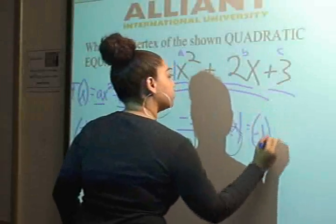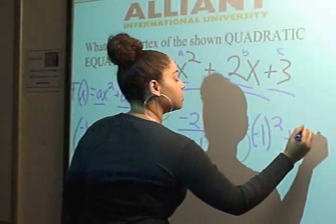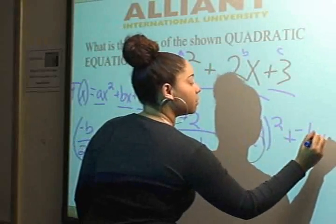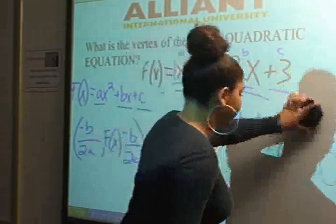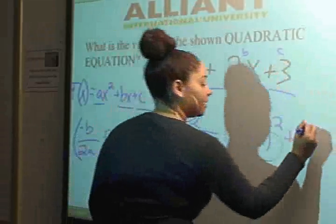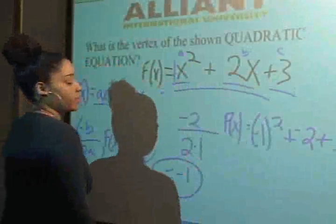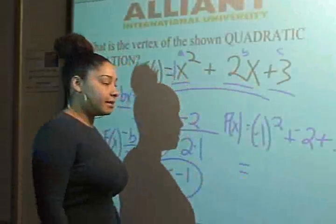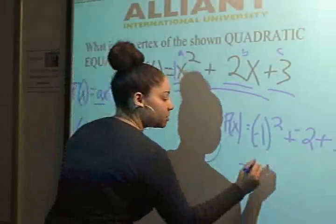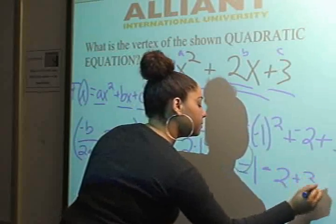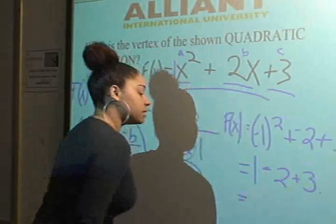(-1)² plus 2 times (-1), which gives you -2, plus 3. Now, anything negative that's squared becomes positive, so this becomes 1 - 2 + 3, which equals 2.